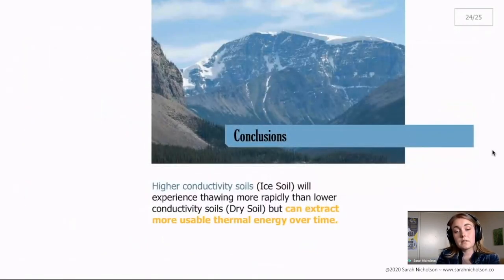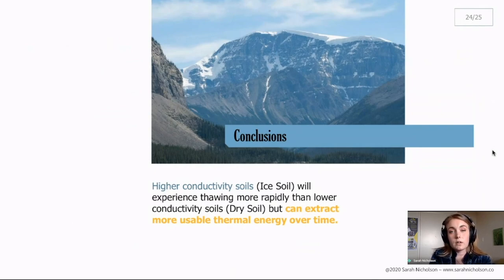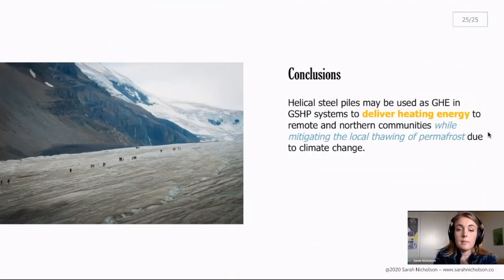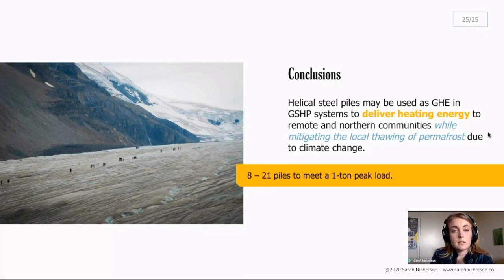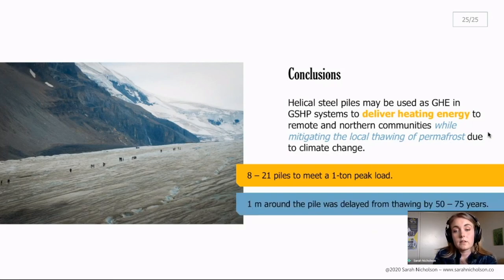So in conclusion, the conductivity of the soil had a significant effect on its response to warming. Where the higher conductivity soil was not as benefited from the ground thermal imbalance, but it was able to extract more usable thermal energy over time. So these ice soils may warm quicker due to climate change, but we can also use them for greater thermal energy production. But for both cases, it was shown through this research that these helical steel piles are usable as the ground heat exchanger in these ground source heat pumps. They are able to deliver heating with only 8 to 21 piles required to meet a 1 ton peak heating load. And also, they can mitigate the local thawing of permafrost in these regions due to climate change. So around 1 meter of the soil was delayed from thawing by 50 to 75 years.